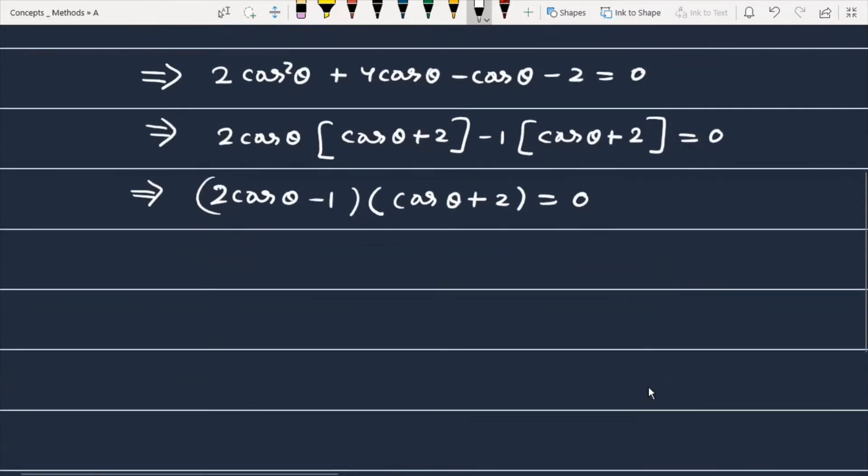Now we have two factors here. We get two numbers whose product is 0 when the first term is 0 or the second term is 0. So here I have to write either cosθ equals 1/2 or cosθ equals minus 2.